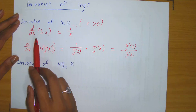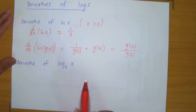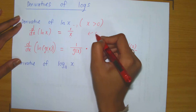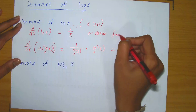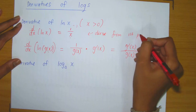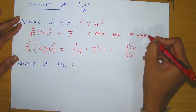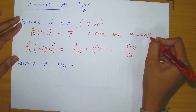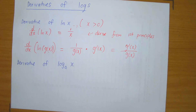Another important thing to mention is that the derivative of ln of x equals 1 over x, and this can be easily derived from first principles — meaning you can calculate this using the formula involving a limit, which was covered in the first lecture on derivatives.